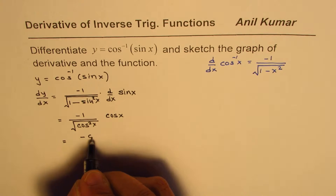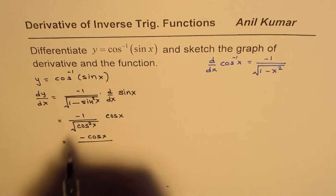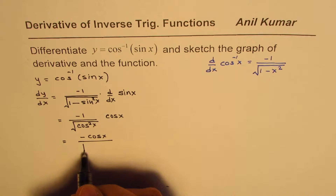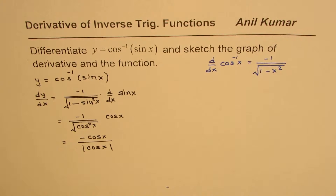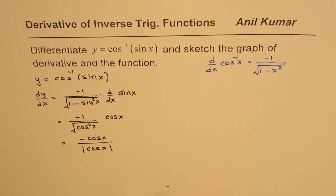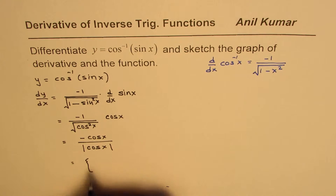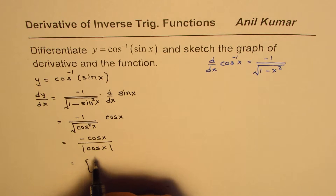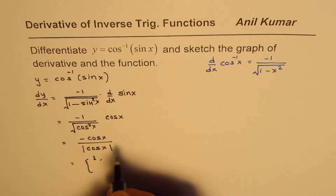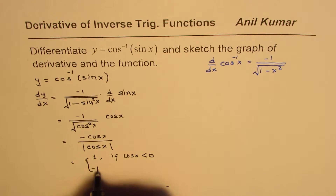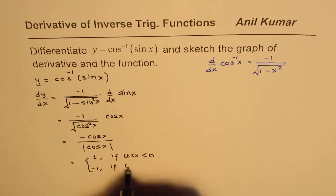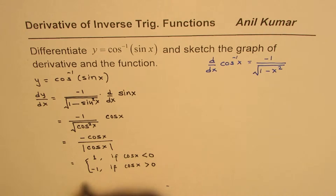Since 1 minus sine squared x equals cos squared x, the square root of cos squared x is the absolute value of cos x. So we get minus cos x over absolute value of cos x. This function can have two values: it equals positive 1 when cos x is negative, and minus 1 when cos x is greater than 0.